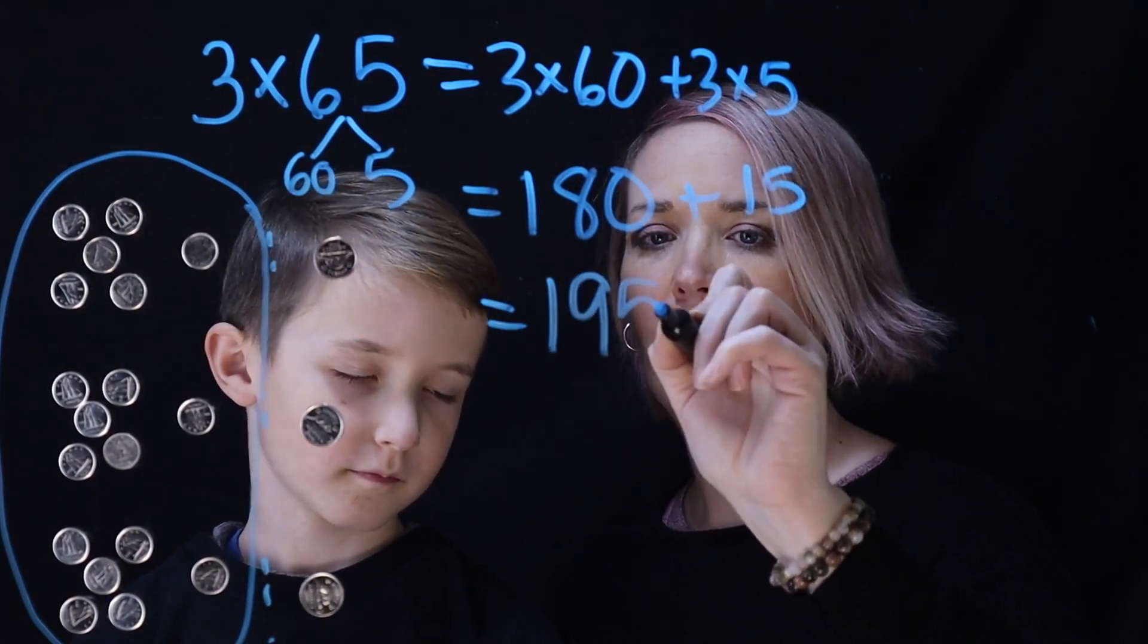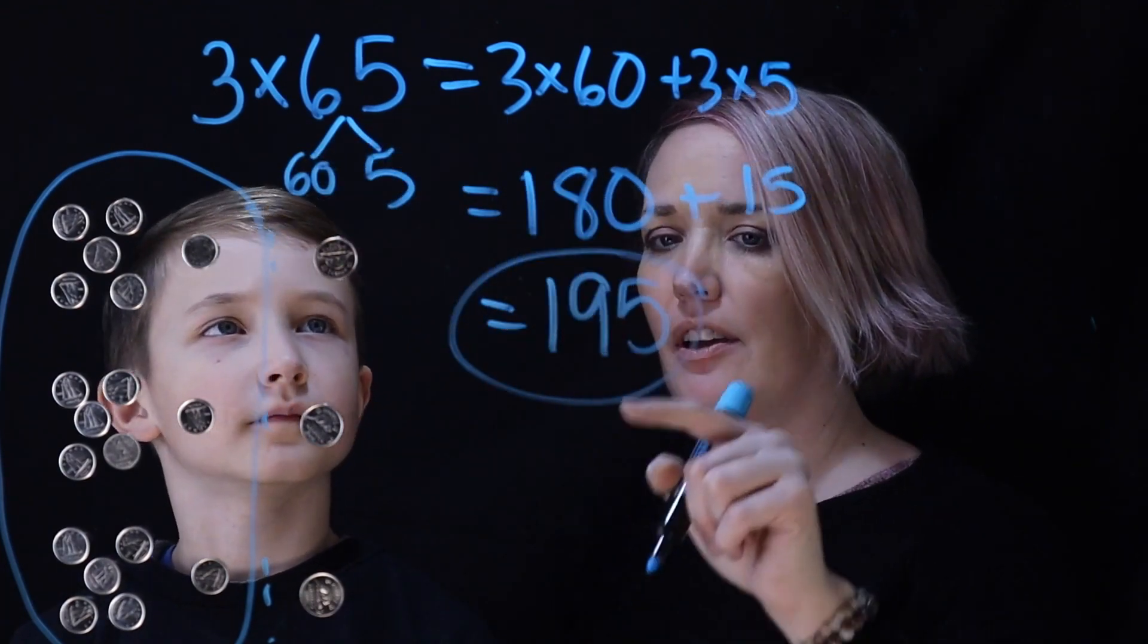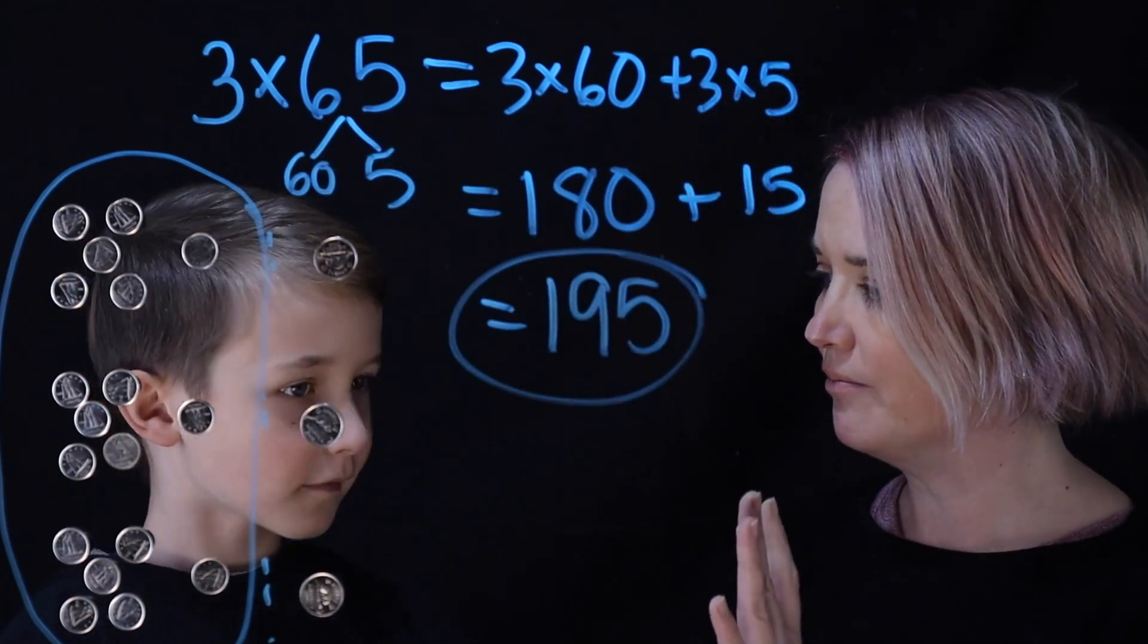Yeah. So 195. So 3 times 65 equals 195. That's awesome. Thank you. Bye.